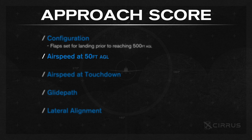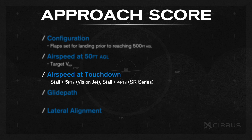Airspeed at 50 feet AGL — that's your V-Ref speed calibrated for that specific flight by your input weight and balance. Airspeed at touchdown — that airspeed is targeted based on weight-calibrated stall speed plus 5 knots if you're in the Vision Jet, and plus 4 knots for SR series aircraft.